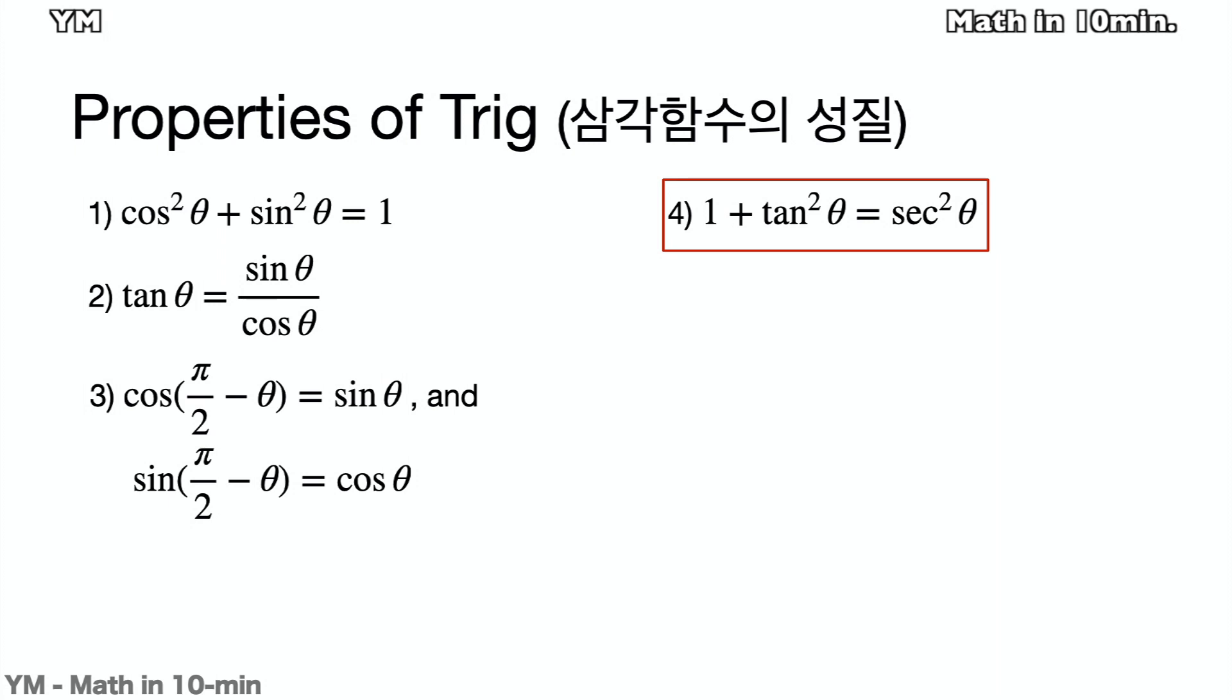Fourth, 1 plus tangent squared theta equals secant squared theta. To prove this, use the first and second property on the left side.